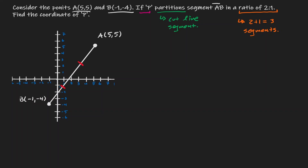Now before we visualize the location of this point P, we have to keep in mind that we have direction on this line segment — we call this line segment AB. The direction is that we're going to start at A and then move towards B. We can see that the location of P will be around here, because at this location we have two equivalent line segments towards A and one equivalent line segment towards B.